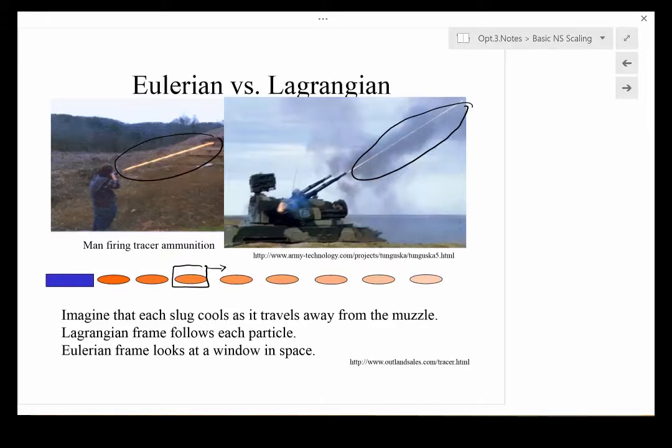On the other hand, if we were to focus on a region in space and ask about all the different slugs that flow through there, that would be considered an Eulerian frame of reference.